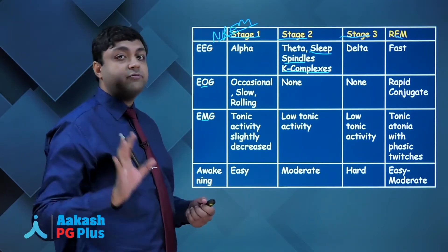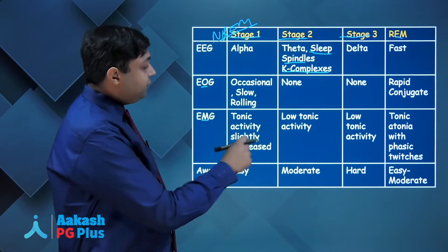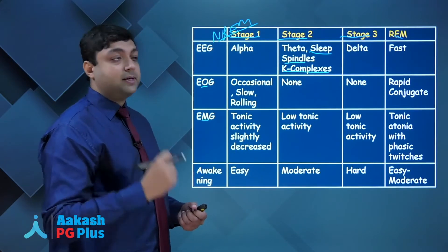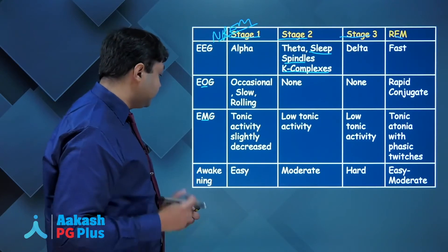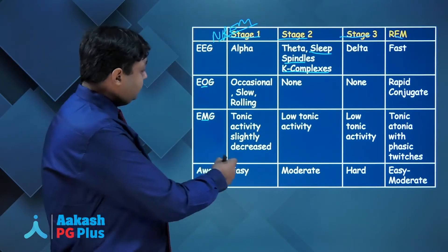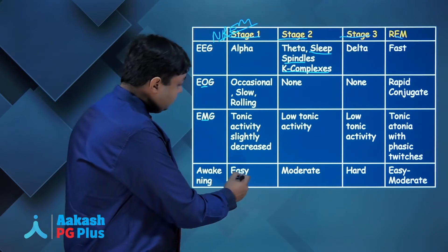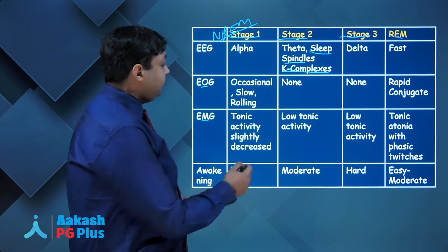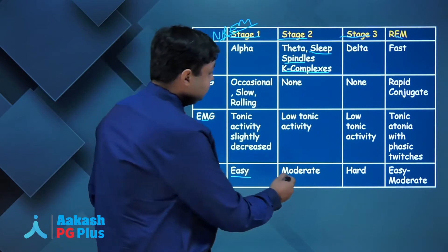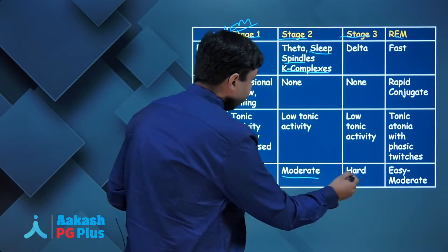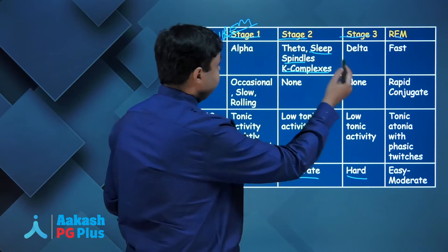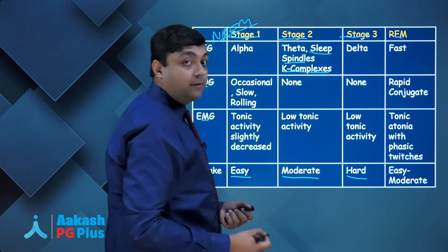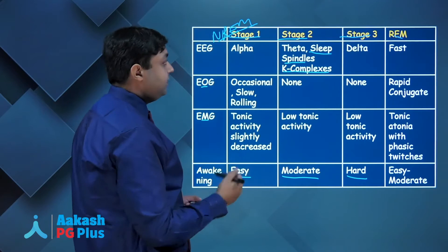Eventually in REM sleep there is tonic atonia — complete loss of muscular tone — with phasic twitches, meaning small muscle spasms or twitches in between. A person is essentially drowsy in stage 1 and can easily be awakened. The ability to awaken a person becomes harder and harder from stage 2 to stage 3, so it is very hard to awake a person from stage 3 and REM sleep.